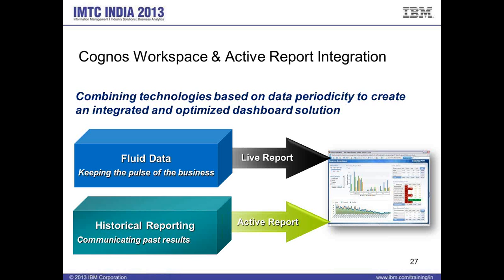All historical data will come as an active report, and all your fluid data — what is happening currently — will come as a live report on the workspace. You can set the connection between your workspace data and the active report data, and make variables talk to each other so that you can pass context from your widget to the active report.